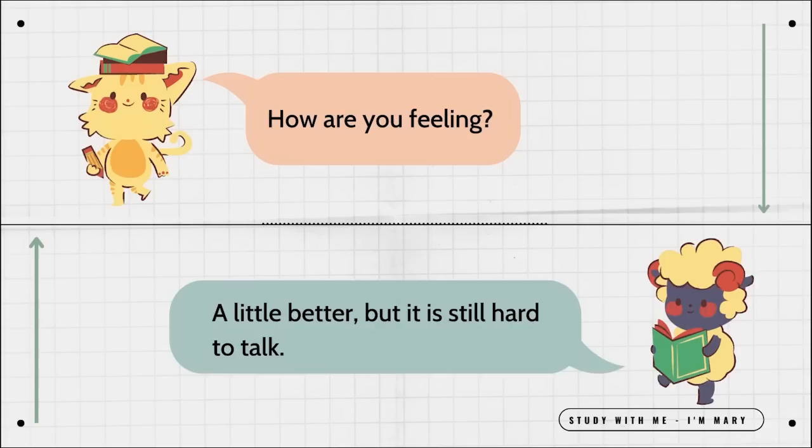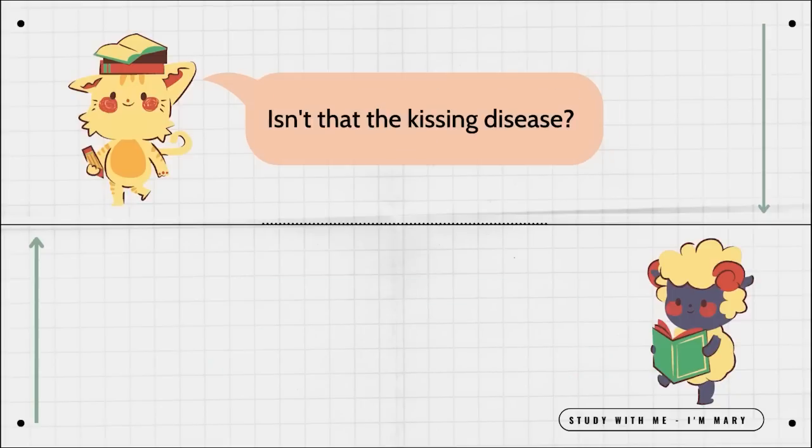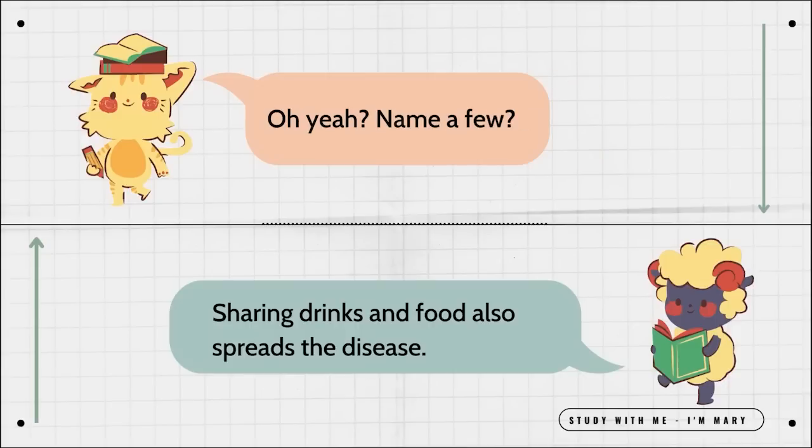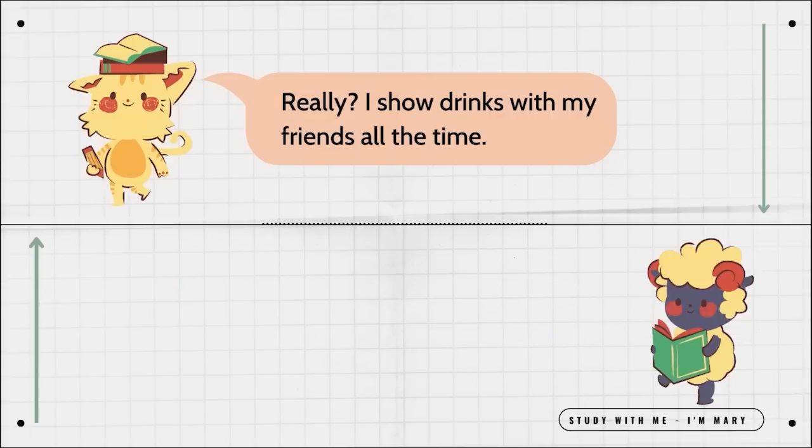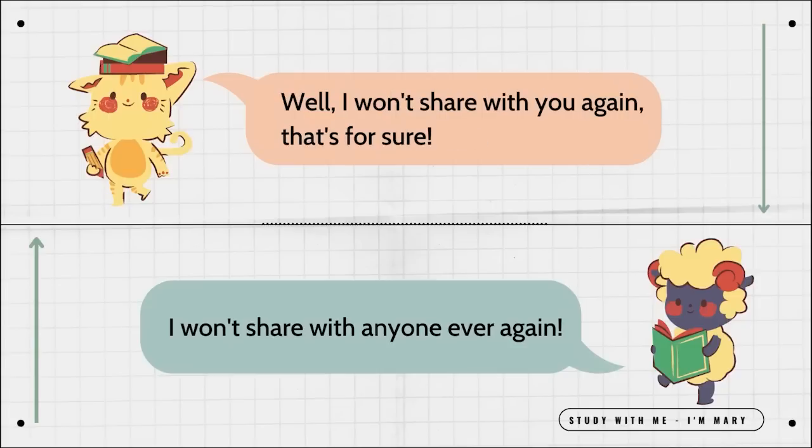How are you feeling? A little better, but it is still hard to talk. What did the doctor say the problem was? It's called mononucleosis. Isn't that the kissing disease? There are other ways to get it, besides kissing. Oh yeah? Name a few. Sharing drinks and food also spreads the disease. Really? I share drinks with my friends all the time. Yeah, so did I. Well, I won't share with you again, that's for sure. I won't share with anyone ever again.